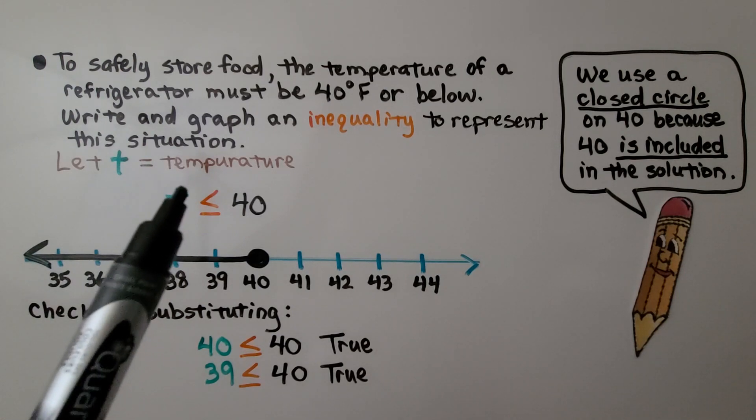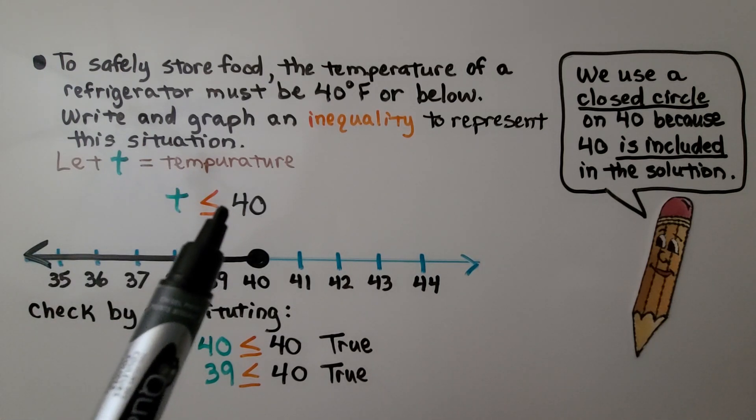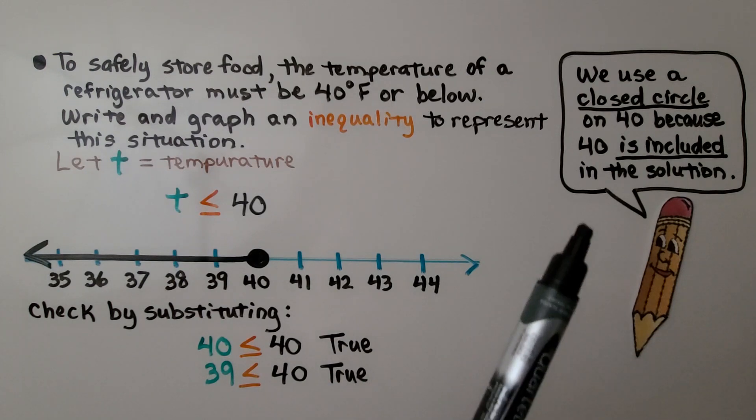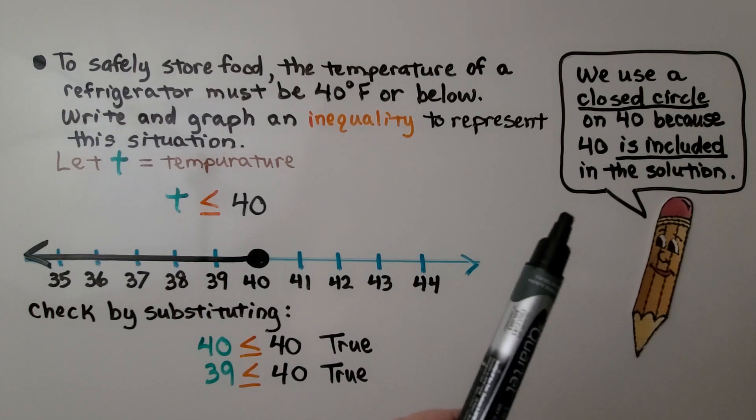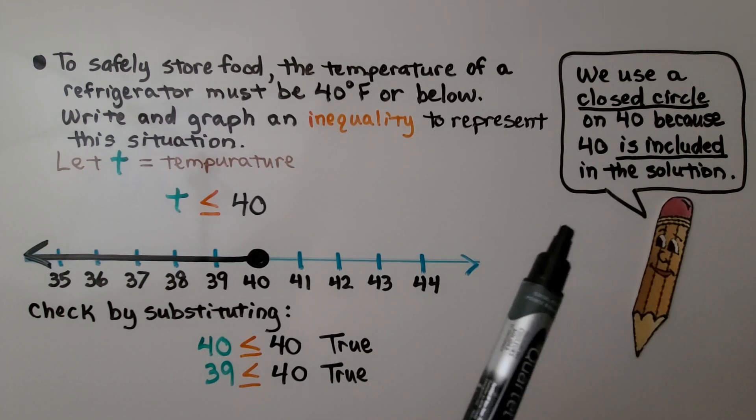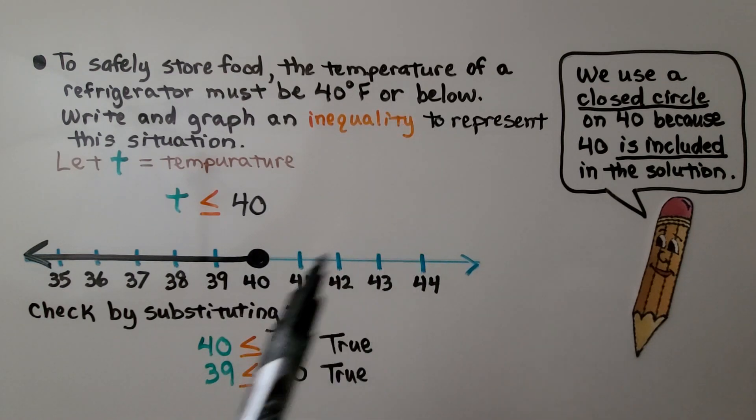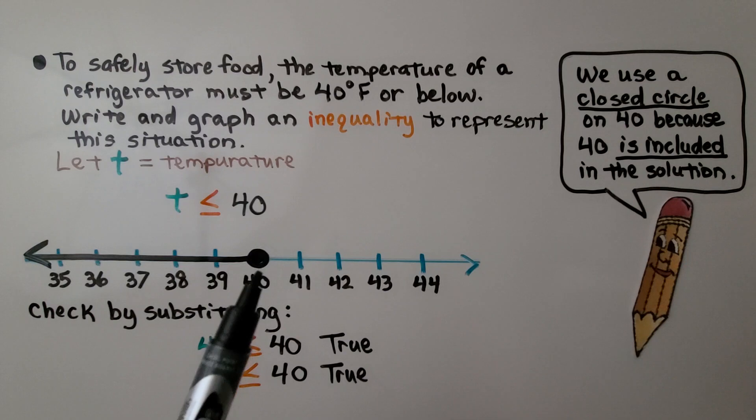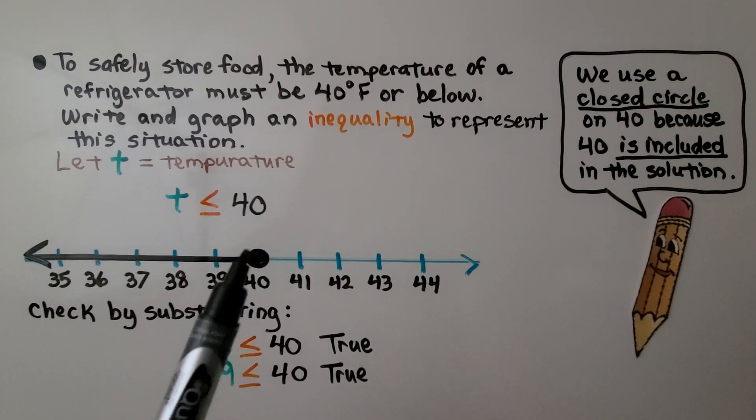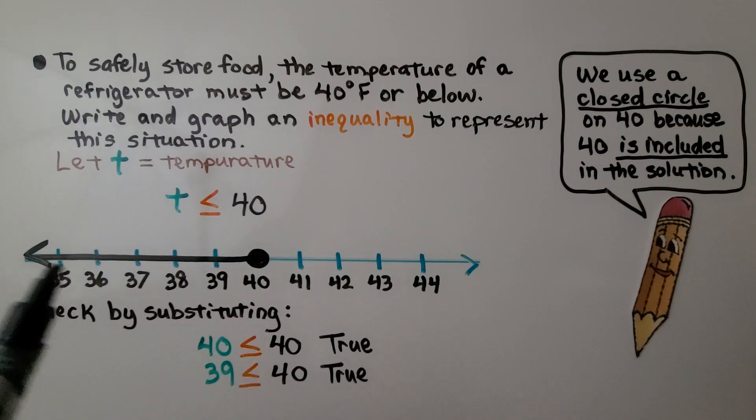So the temperature needs to be less than or equal to 40. We use a closed circle on 40 because 40 is included in the solution. It needs to be 40 degrees or below. That means it's included. We draw our closed circle and a ray going to the lesser numbers to show below 40 degrees.